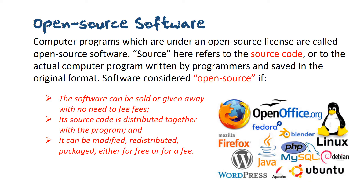Software is considered open source if the software can be sold or given away with no need to pay fees, its source code is distributed together with the program, and it can be modified, redistributed, or packaged, either for free or for a fee.